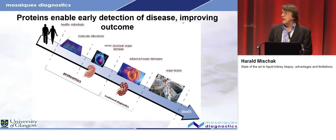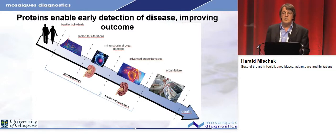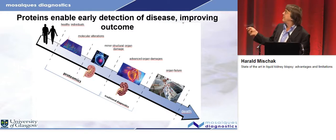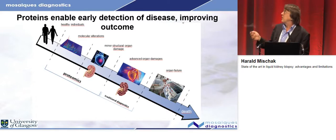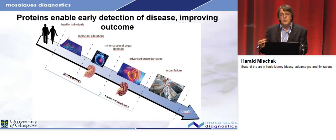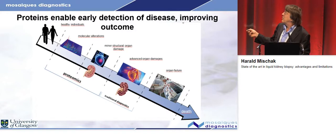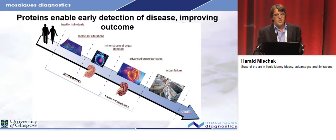The status quo in the traditional approach is that once we have reached a stage where there is advanced organ damage, it will be diagnosed if possible. But the progress towards organ failure and death can only be delayed — it cannot be stopped, typically. While all these processes start at the molecular level: first we have the molecular changes, and this is where proteomics comes in. We should be able to see these molecular changes in the kidney when we analyze the urine.